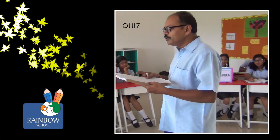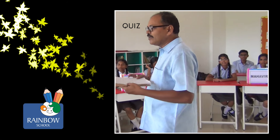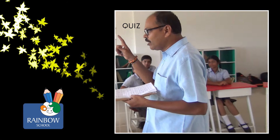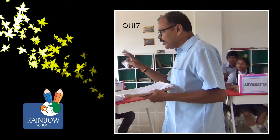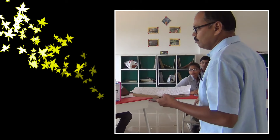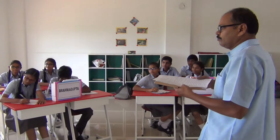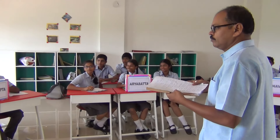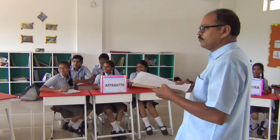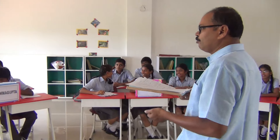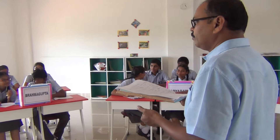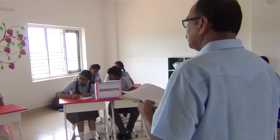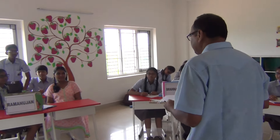The exponent of 2 in the prime factorization of 144 is 4. Very good.